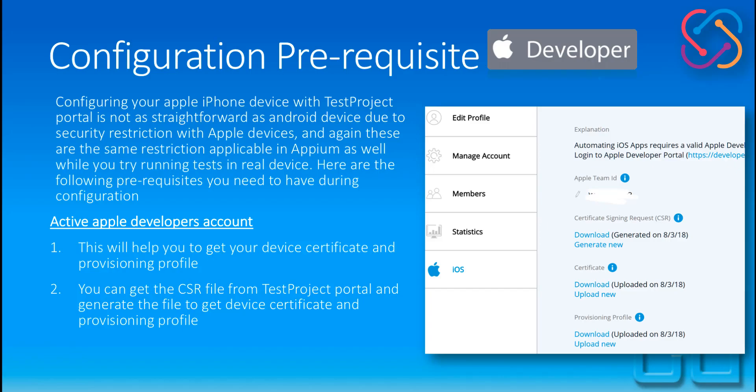To run a test on a real Apple device, you need a device certificate as well as a provisioning profile. This is a restriction brought by Apple itself. The active Apple developer account will help you get the device certificate and provisioning profile. You can get the CSR file from the test project portal and generate the files to obtain the device certificates and provisioning profile.